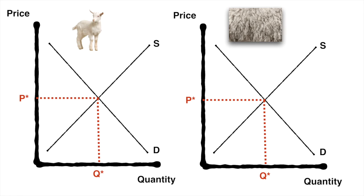Let's examine the graphs for these two markets together — lamb meat and wool. Suppose we start from this equilibrium position. If due to a sudden outbreak of disease that reduces the sheep population there is a decrease in the number of sheep, and thus a decrease in the supply of lamb meat, this will shift the supply curve to the left, resulting in a higher market price and lower equilibrium quantity.